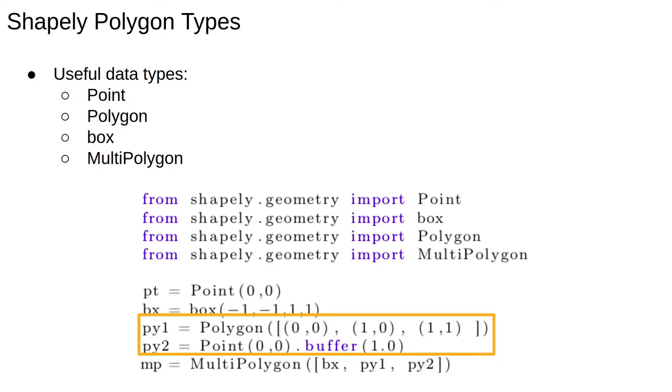The method buffer can be called on Shapely objects to give an approximate representation of all points within a certain distance of the polygon. So here we place a point at 0,0 and use buffer to get a polygon containing all the points at distance 1 away from that point, namely a circle of radius 1 centered at the origin.